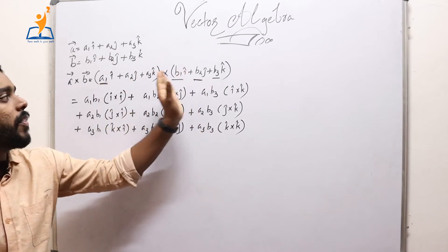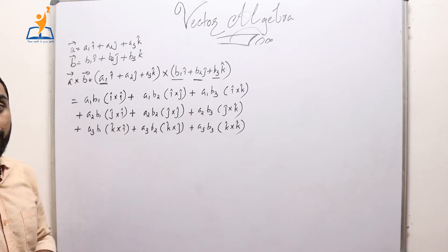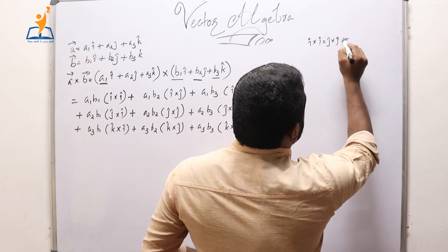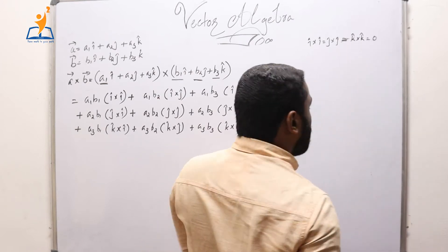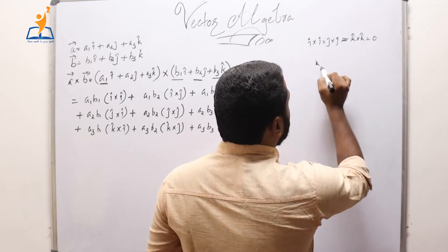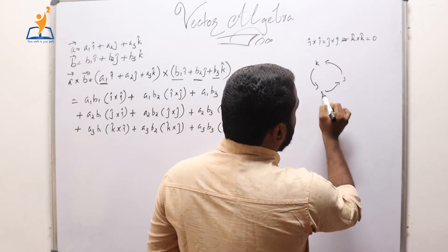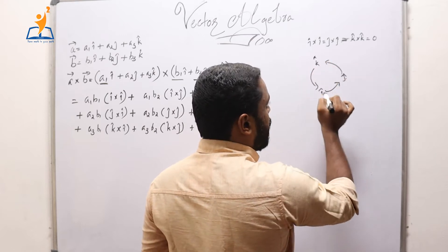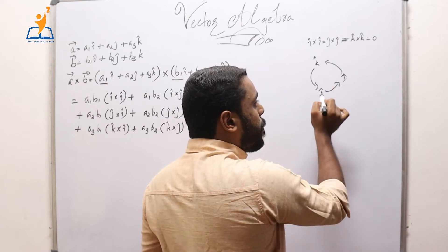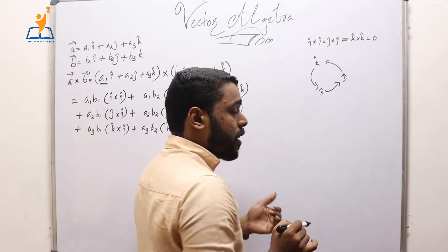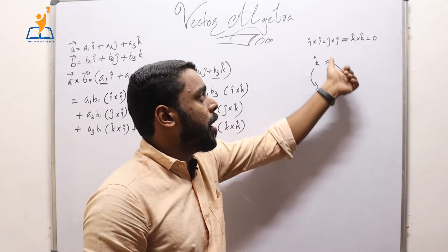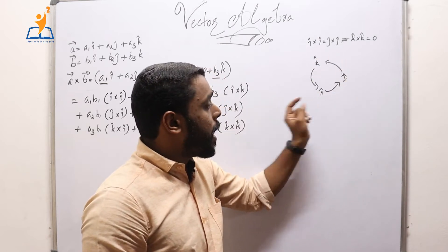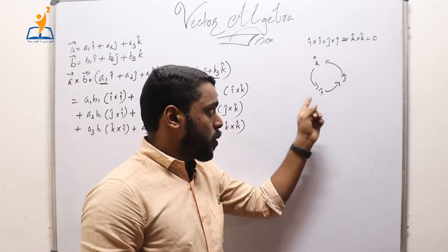Now we apply known results. We learned that i-hat cross i-hat = j-hat cross j-hat = k-hat cross k-hat = 0. Also, from the cyclic circle i→j→k: i-hat cross j-hat = k-hat, j-hat cross k-hat = i-hat, k-hat cross i-hat = j-hat. If we reverse the direction: j-hat cross i-hat = −k-hat, k-hat cross j-hat = −i-hat, and i-hat cross k-hat = −j-hat. Normal direction gives positive vectors; reverse direction gives negative vectors.